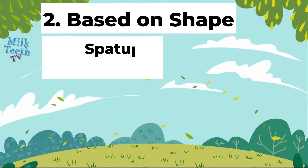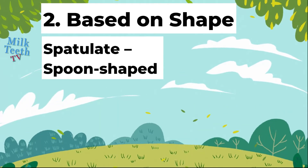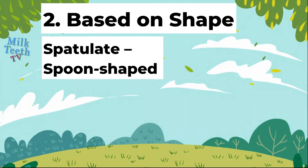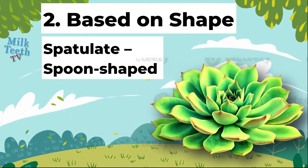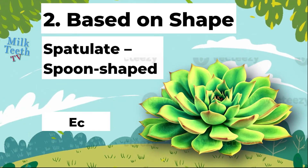Leaves can also have a spoon shape. Such leaves are known as spatulate leaves, for example echeveria.